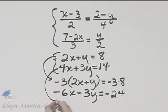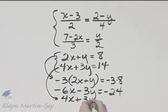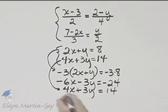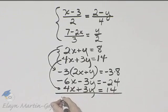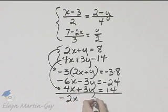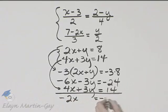Now, underneath I'll write the second equation of the system: 4x plus 3y is equal to 14. Now let's add. Notice the y's subtract out like I want. Negative 6x plus 4x, that's negative 2x, is equal to negative 24 plus 14, that's negative 10.